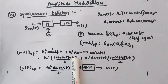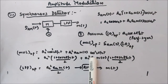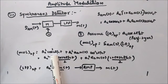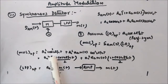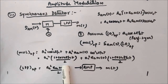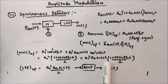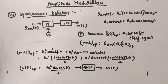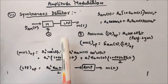Multiplying these together, you get the multiplier output: Ac²·cos²(2π·fc·t) plus Ac²·ka·m(t)·cos²(2π·fc·t). Applying the identity cos²θ = (1 + cos2θ)/2 to both terms, you get Ac²·(1 + cos(4π·fc·t))/2 plus Ac²·ka·m(t)·(1 + cos(4π·fc·t))/2.